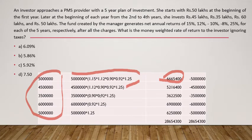The third investment of 35 lakhs is reinvested for only three years, with two negative returns of 0.90 and 0.92 and one positive return factored in. For the fourth investment of 60 lakhs, it gets only two years of return. The final investment of 50 lakhs is compounded for just one year.